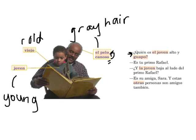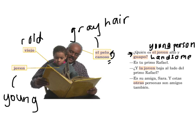So the boy asks: ¿Quién es el joven alto y guapo? — Who is the young person that's tall? El joven is the noun — the young person. And guapo means handsome or good-looking. Let's go ahead and put good-looking on there too, because really you can use it for a boy or a girl. So have both of those there. And the grandfather answers: it's your cousin, Rafael.